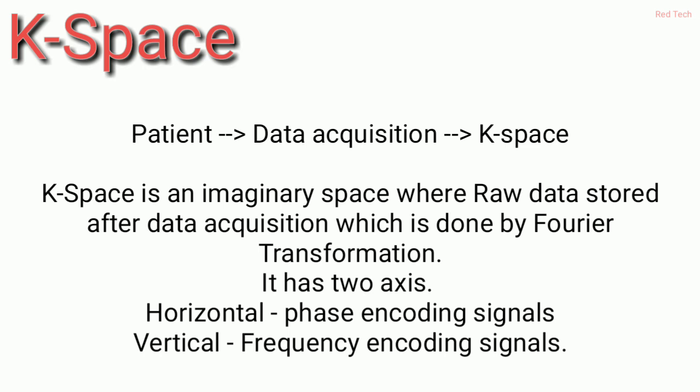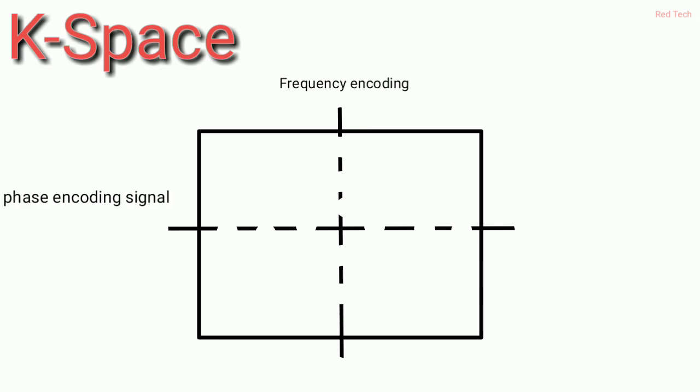Then the lines are filled — this is called K-space. Remember: K-space is an imaginary space. We conceptualize it as the place where all data is stored, processed by Fourier transformation, and this conceptual space is what we call K-space.